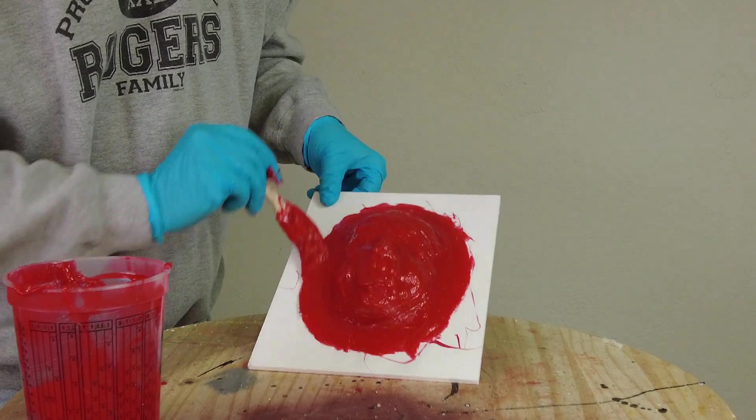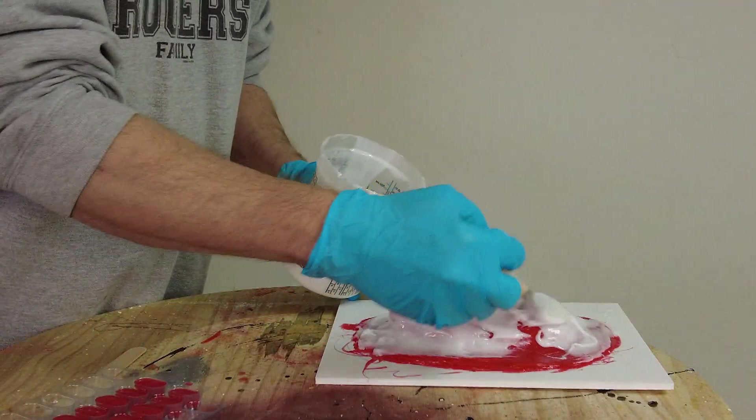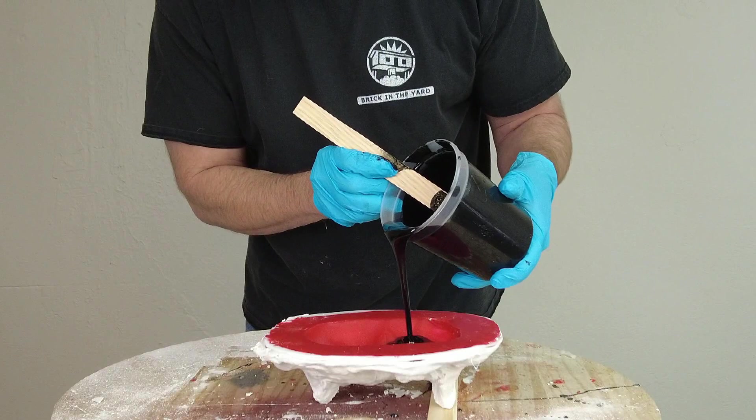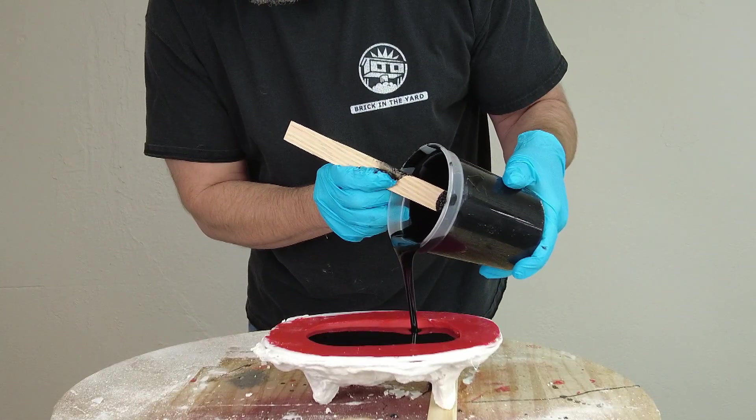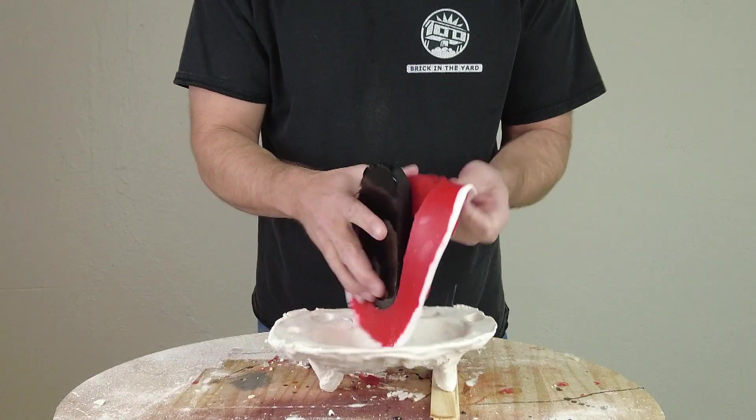Some of you have requested firmer silicones in the 1-to-1 ratio, so ask and you shall receive. In this video, we'll also introduce some of the new 1-to-1 platinum formulas, and wrap it up with a quick cast using the TC-808 jet black resin.